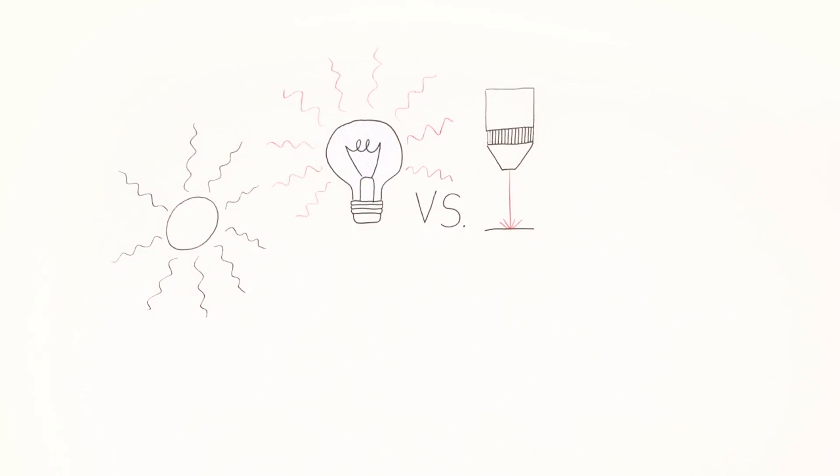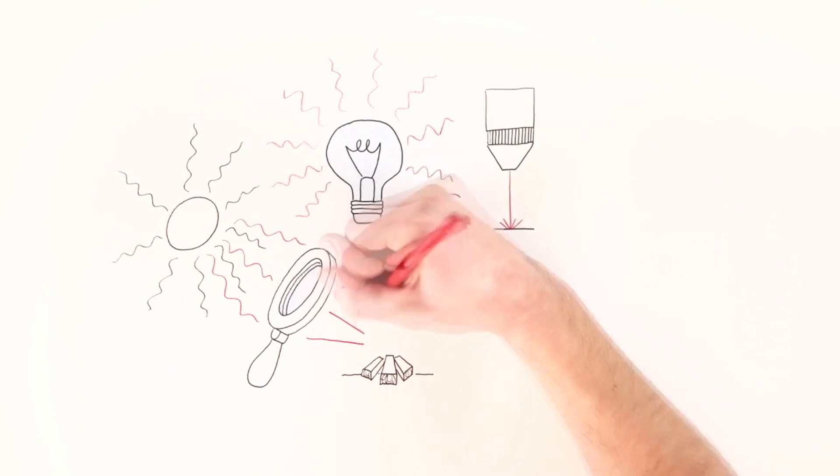The light bulb radiates in all directions, whereas the beam of a laser is directed. The laser light is coherent, so the wave trains are much longer than those coming from a light bulb.